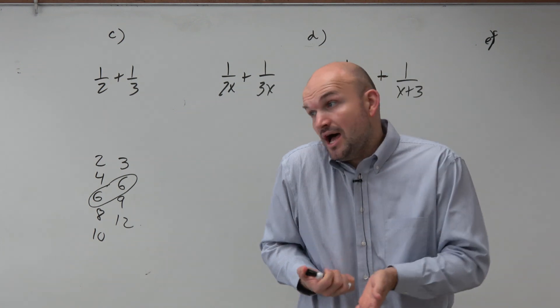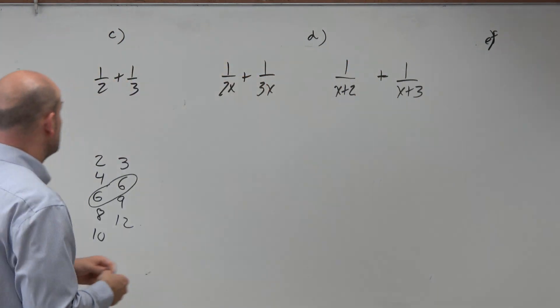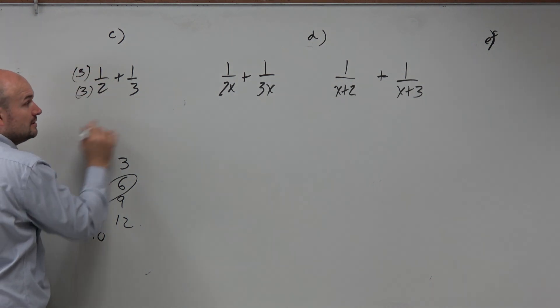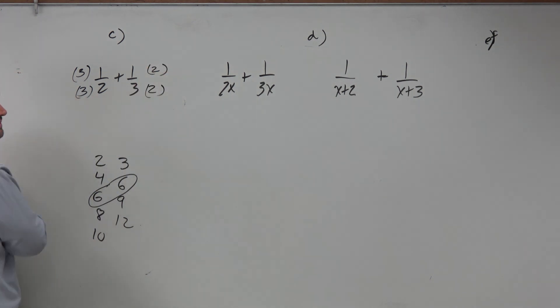And then what we say is, well, if we're going to combine these, they both have to have a denominator of 6. So then you say, well, what do you need to do to get this to be a denominator of 6? Multiply it by 3. But you just can't multiply a fraction in the denominator. You have to multiply it in the numerator and the denominator. Because that produces what we call an equivalent fraction. In the same respect, we have to do 2 here.